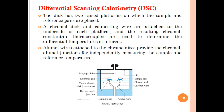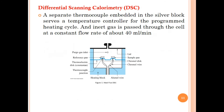A chromel disk and connecting wire attached to the underside of each platform form chromel-constantan thermocouples used to determine the differential temperature. Alumel wires attached to the chromel disk provide the chromel-alumel junction for independently measuring sample and reference temperatures. A separate thermocouple embedded in the silver block serves as a temperature controller for the programmed heating cycle, and an inert purge gas is passed through the cell at a constant flow rate of about 40 ml per minute.